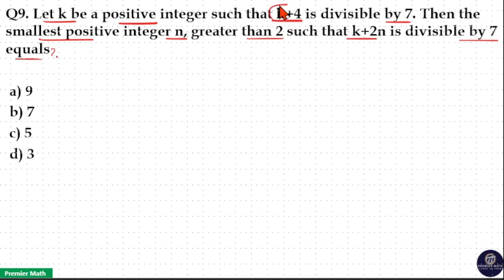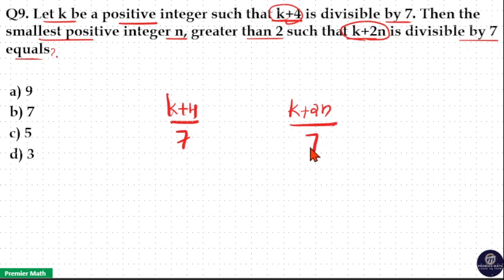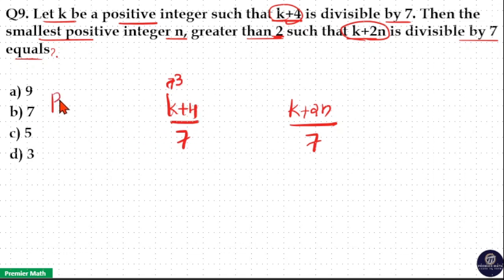Here k plus 4 is divisible by 7, and k plus 2n is also divisible by 7. We need to find the value of n which is greater than 2. Since k plus 4 is divisible by 7, the smallest possible value of k is 3, because 3 plus 4 is 7, and 7 divided by 7 is 1. So we put k equal to 3.